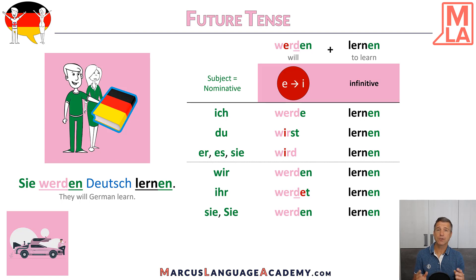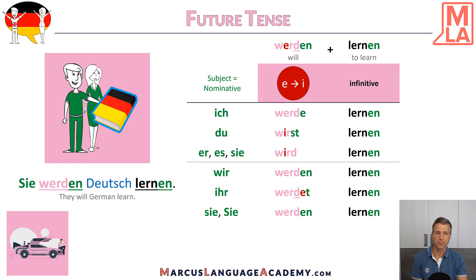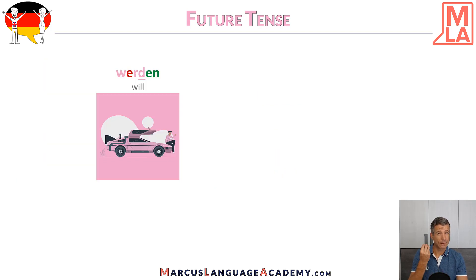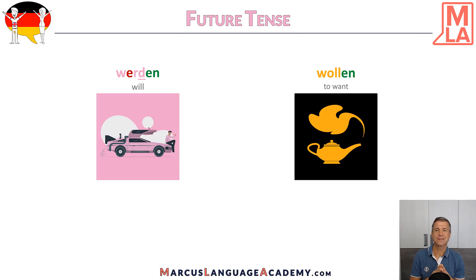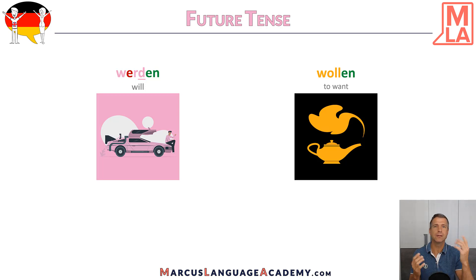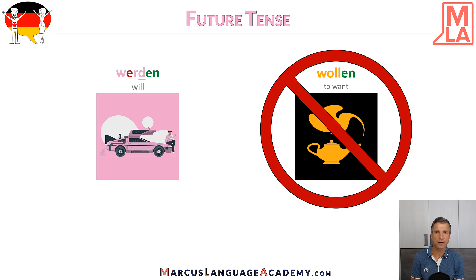Quite easy because you can apply this to every verb. Remember, the second verb is infinitive and goes at the end. We just need to know the conjugation of 'werden'. One thing I always see with my students is that they mix up two verbs — they mix up 'werden' with 'wollen'. For example, 'wollen' in first person is 'ich will', and people think that's 'I will' for the future. No — that means 'I want'. Please don't make the same mistake of using 'wollen' for the future tense. The auxiliary is 'werden'.